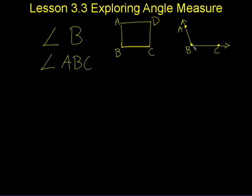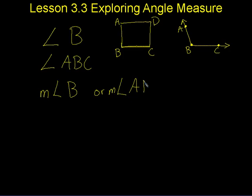Another symbol that you'll see on the study link for sure is that one, or you could also see this one. This symbol still means angle — the M just means the measure. So if it's M angle B, that means the measure of angle B; they want to know the degrees of that angle.